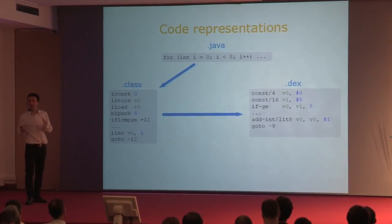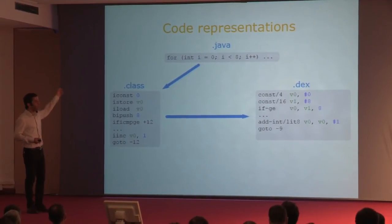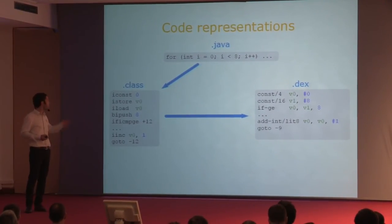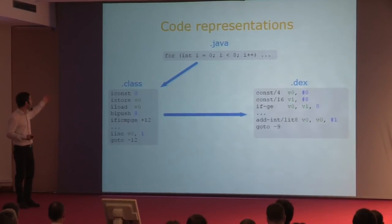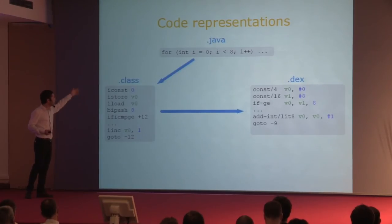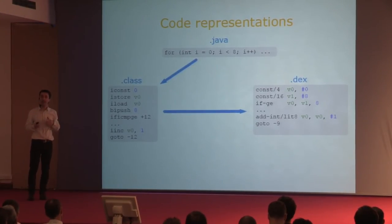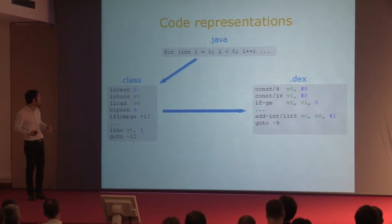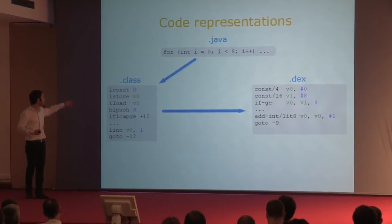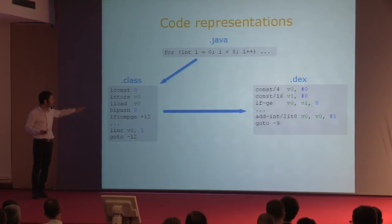Just to give you a flavor of what these formats look like, I've taken a small piece of code—a for loop—and shown what it looks like when you convert it to the Java bytecode format. The Java bytecode format is used by the Java Virtual Machine, it's based on a stack representation and uses local variables. In the code, a constant is pushed on the stack and then popped again, put in a variable, and so on.